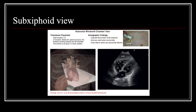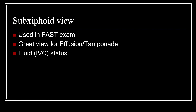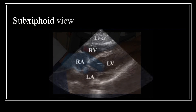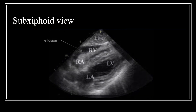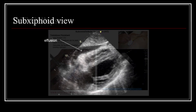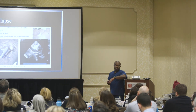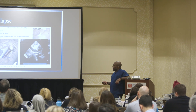The sub-xiphoid view can be a little painful for the patient but can look almost like the apical view and lets you really evaluate the pericardium well. On the FAST exam, you can see the right ventricle, right atria, left ventricle, and left atria, with the effusion around the pericardium. For sepsis management, we're now using the IVC — looking for IVC collapse during inhalation to measure how much fluid we think the patient is going to need. We'll practice that next door.